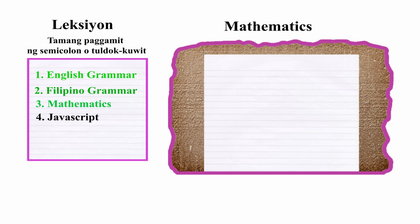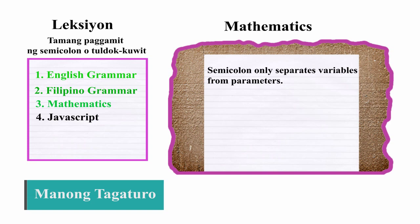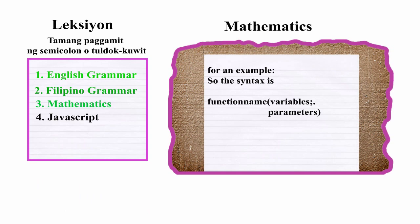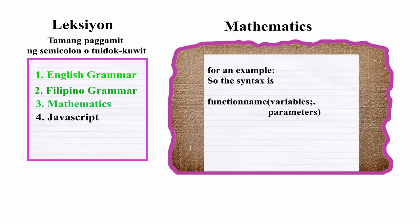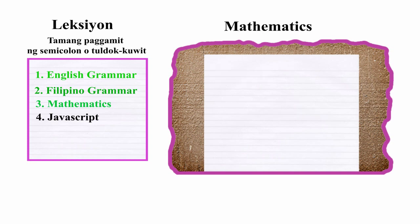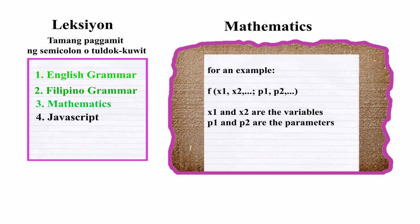How to use semicolon in mathematics equations or problems. Semicolon only separates variables from parameters. For example, if I write F — which means function — X1 and X2 are the variables; P1 and P2 are the parameters. So the general syntax is: function name, variables, semicolon, and parameters.